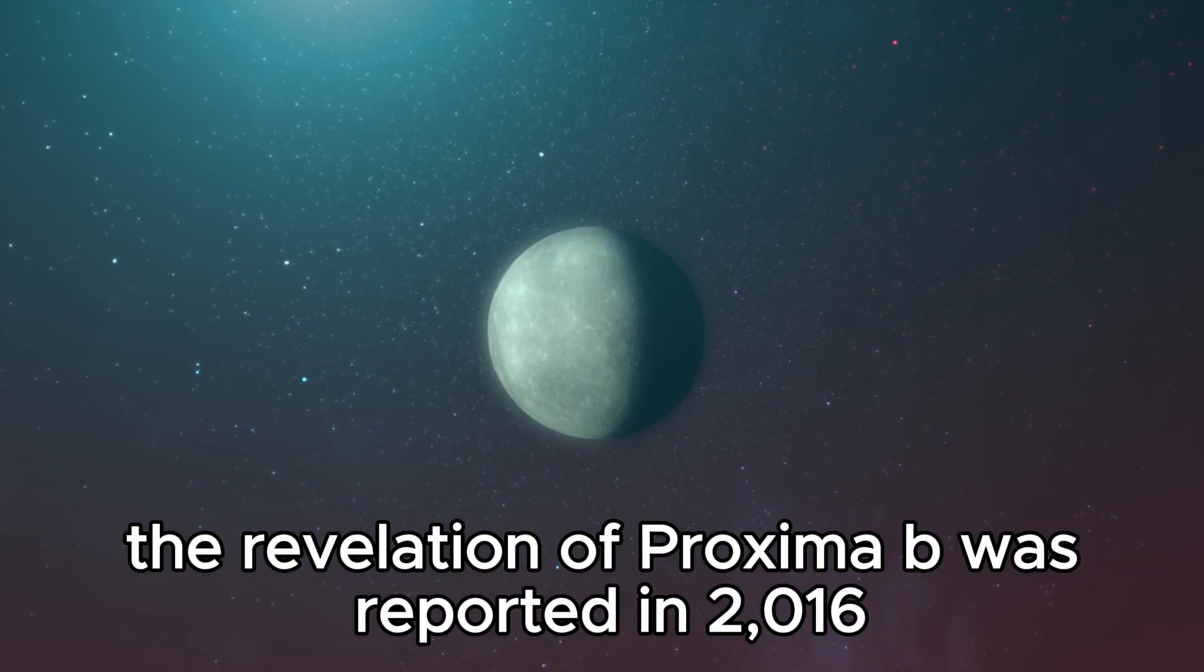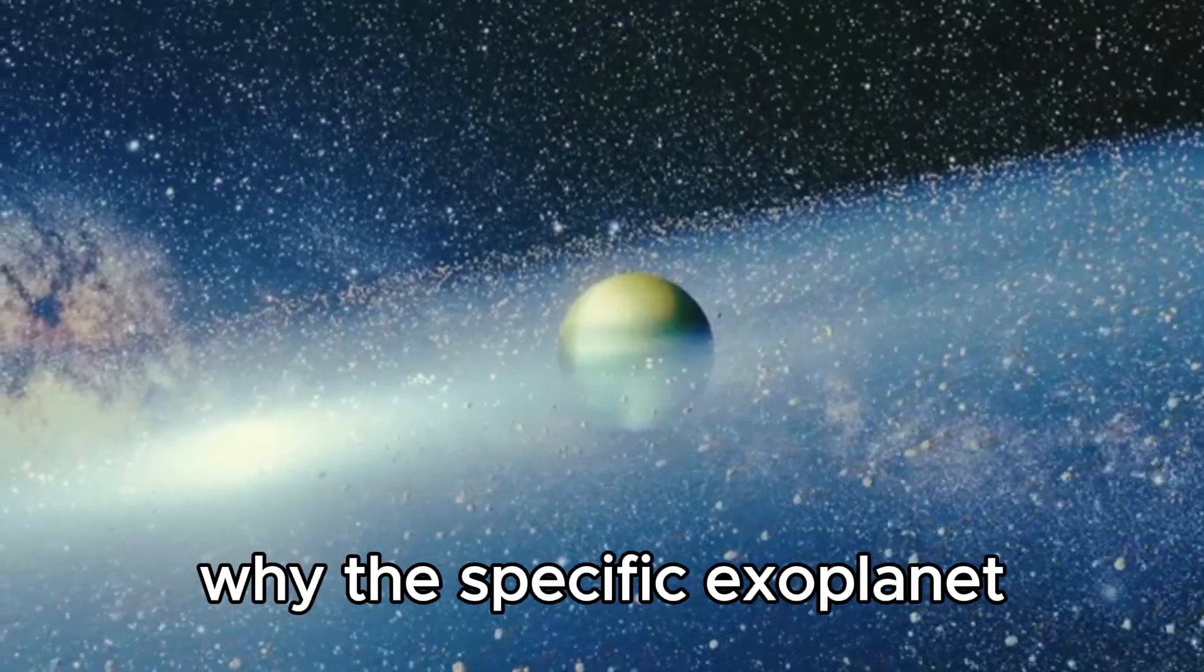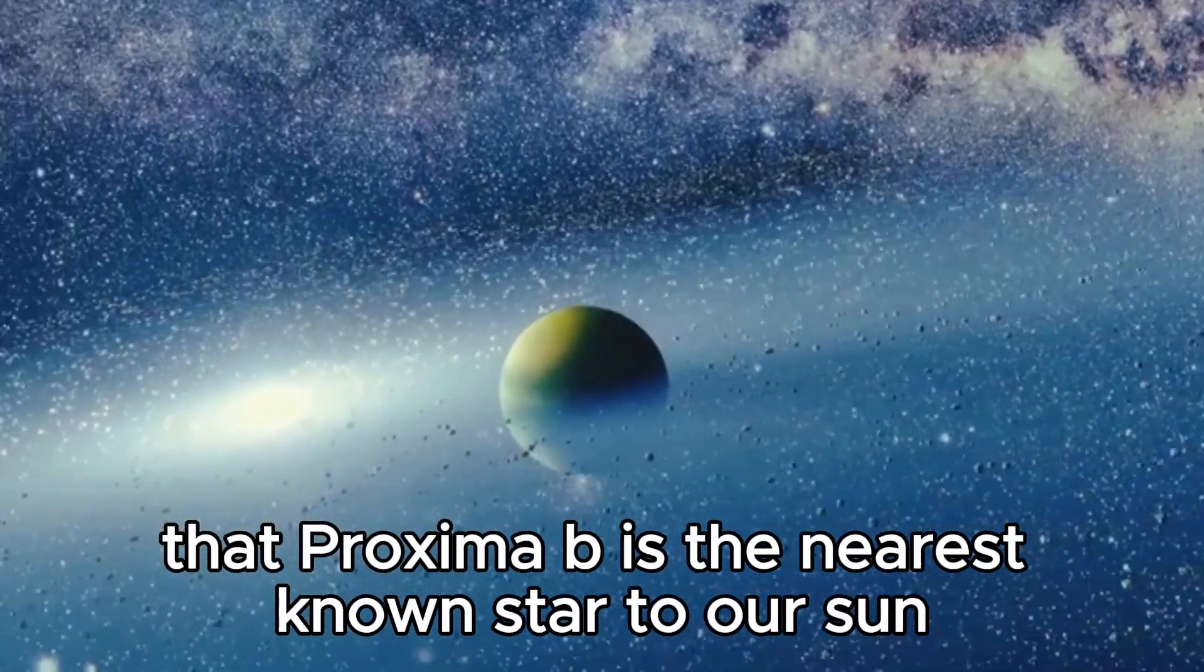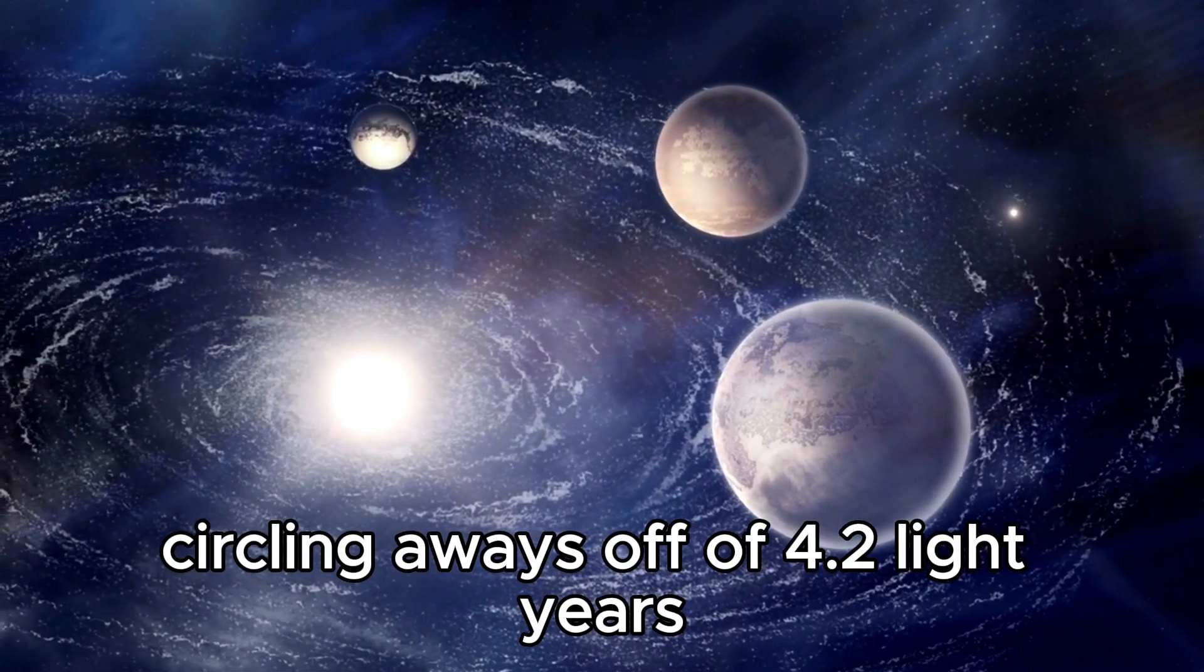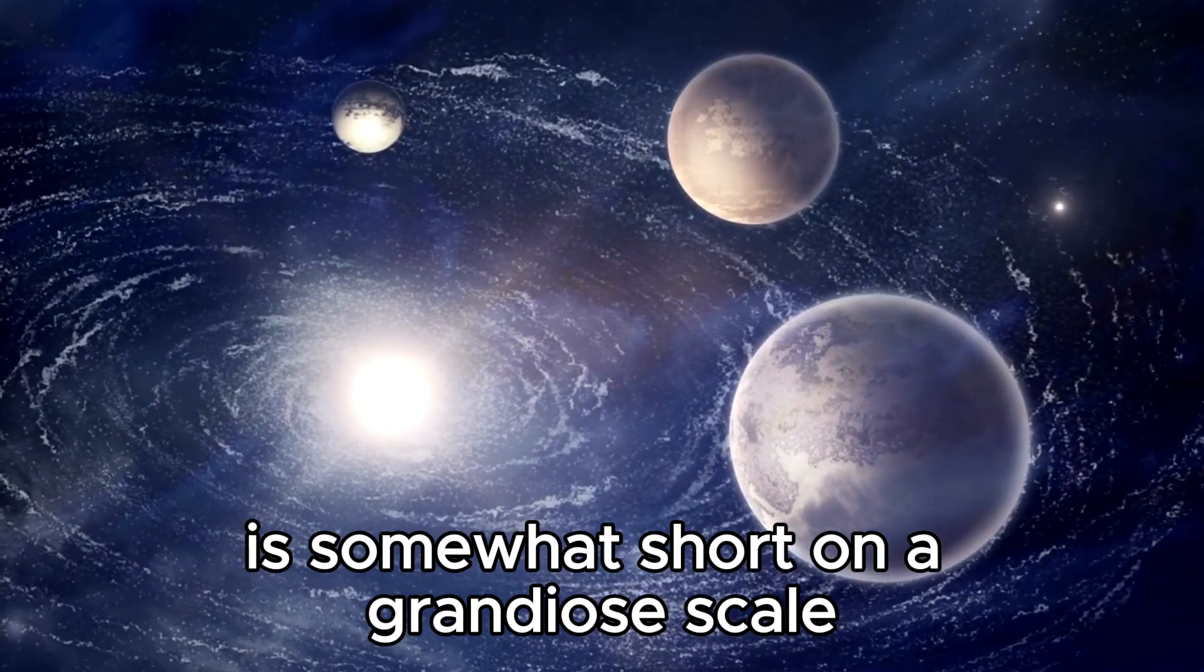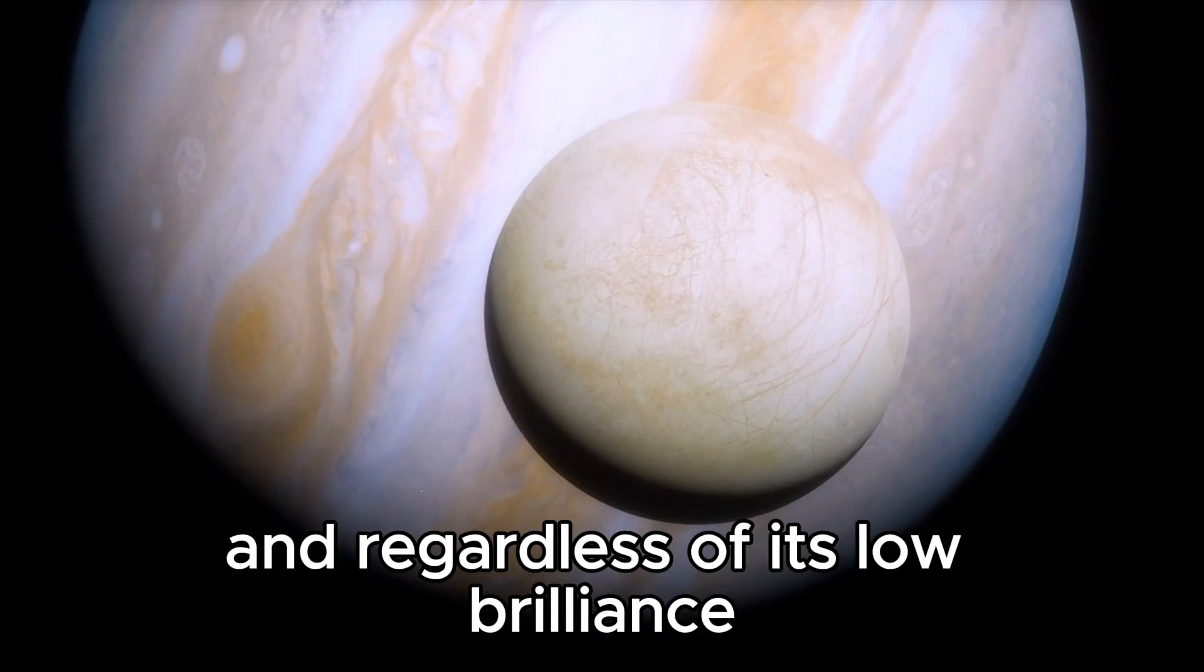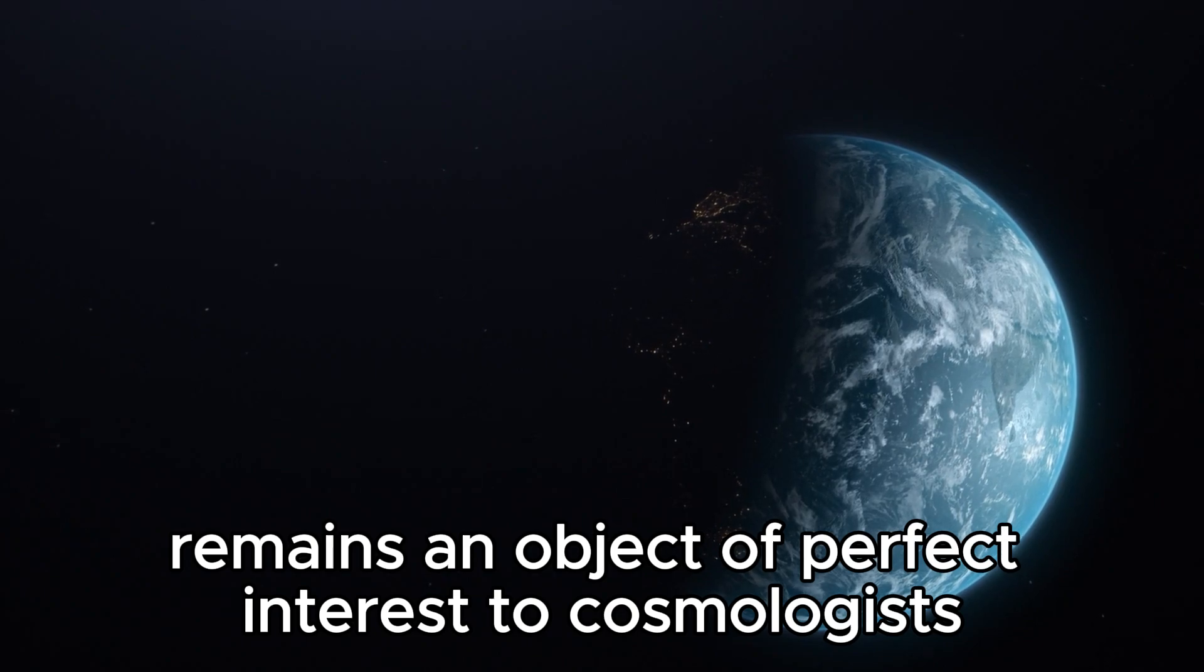The discovery of Proxima b was announced in 2016, which brings up the issue of why this specific exoplanet has created such interest. One explanation is that Proxima b is the nearest known star to our sun, circling at 4.2 light-years, which, while enormous to us, is relatively short on a grandiose scale. It is part of the triple star system known as Alpha Centauri, and remains an object of great interest to cosmologists.